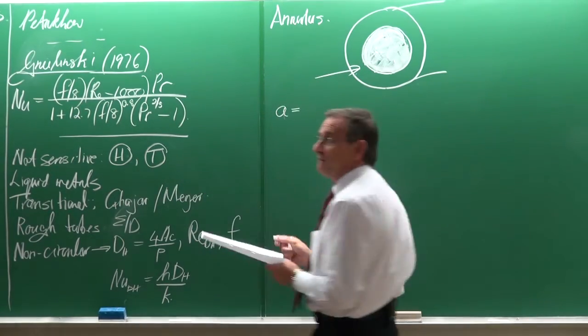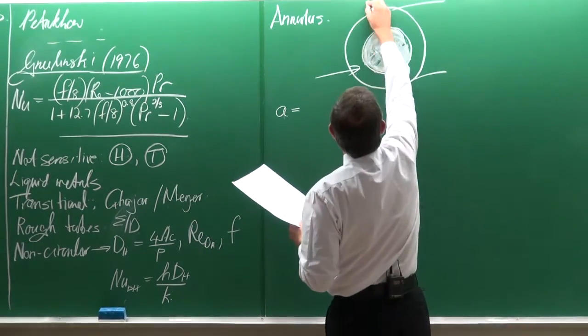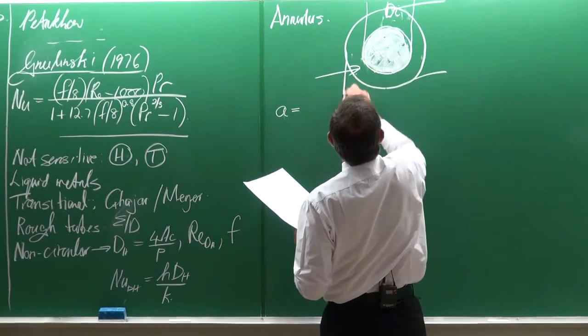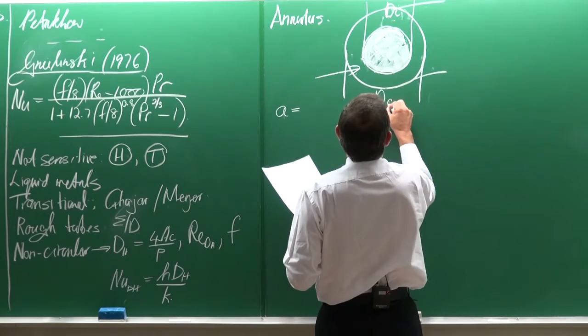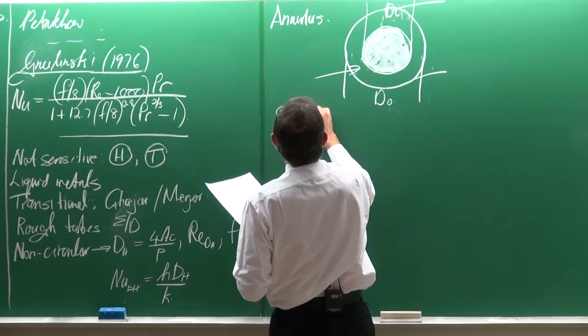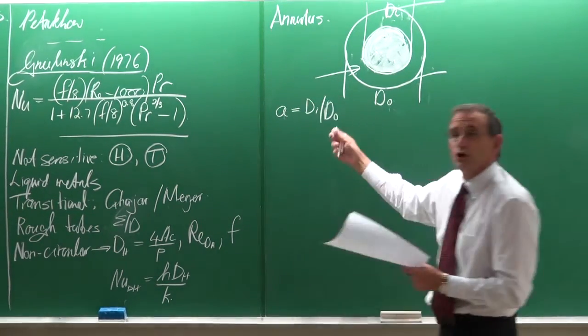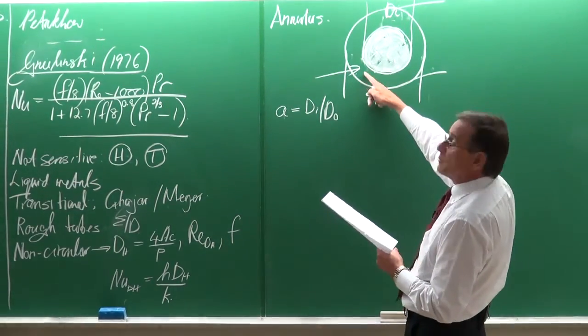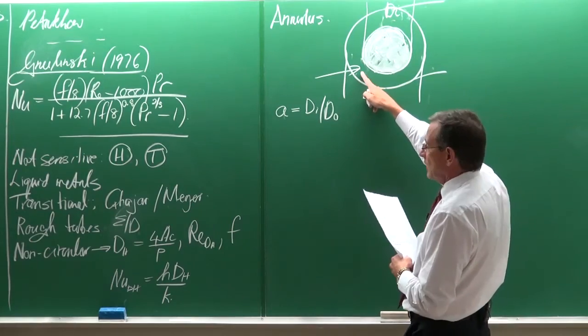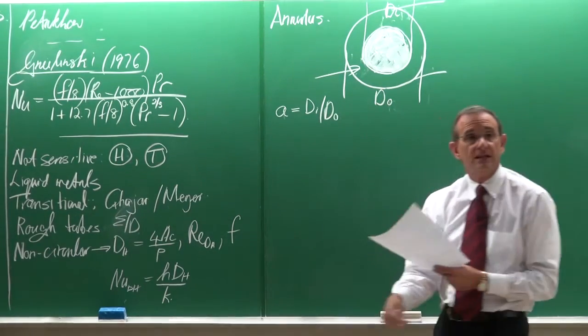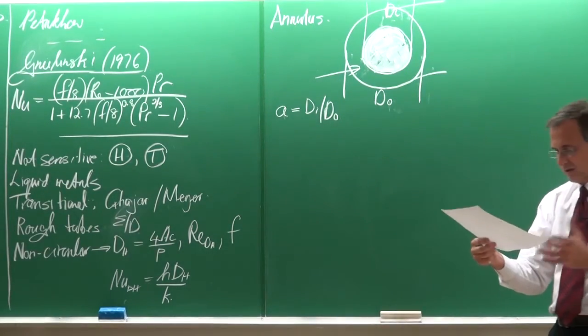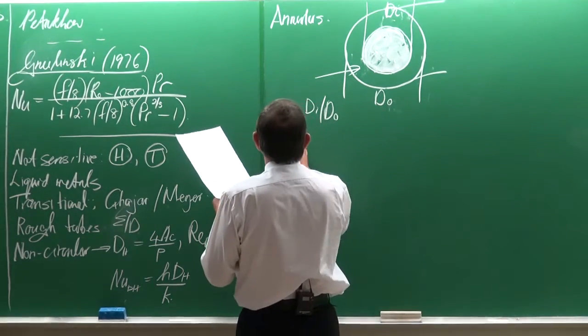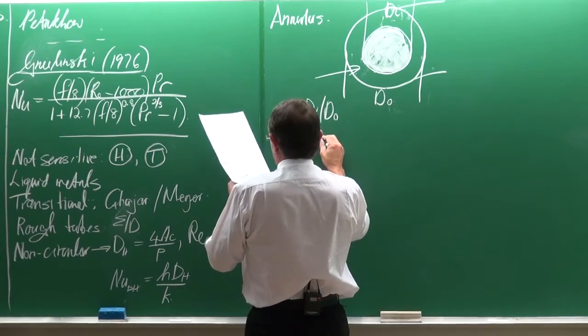For those cases, there is an A value that is typically defined as that diameter, the inside diameter, divided by the outside diameter. And there are different approaches that can be followed for this type of problem. The first approach that you can do is you can just say, well, let's go and calculate the hydraulic diameter. That's the first one that you can do.